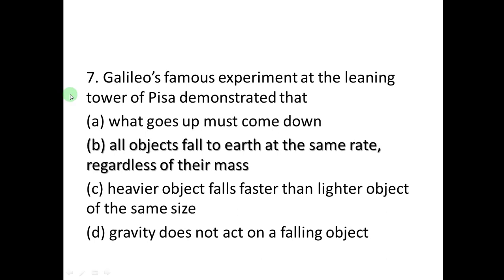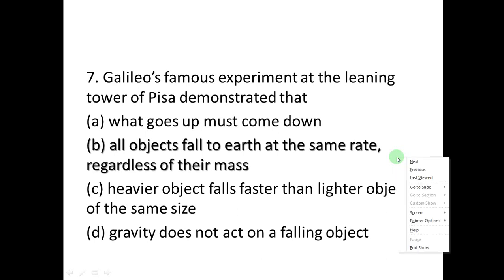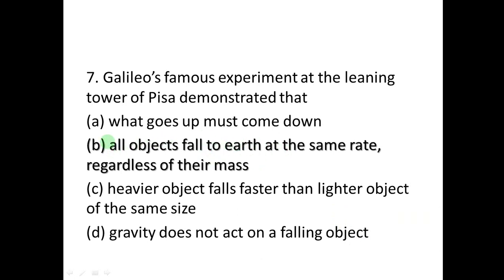The last question is question number seven. Galileo's famous experiment at the Leaning Tower of Pisa demonstrates that: A: what goes up must come down — that is the gravity concept. B: All objects fall to the earth at the same rate regardless of their mass. C: A heavier object falls faster than a lighter object of the same size — that is false. D: Gravity does not act on a falling object — false. The answer is B: all objects fall to the earth at the same rate regardless of their mass.